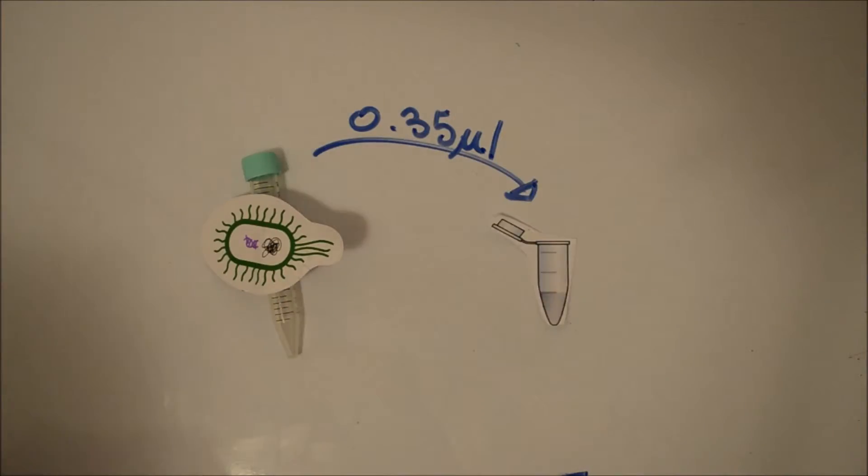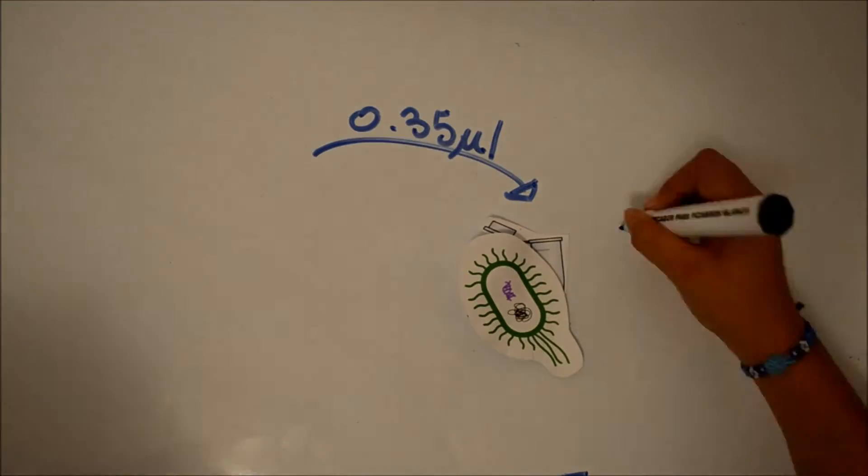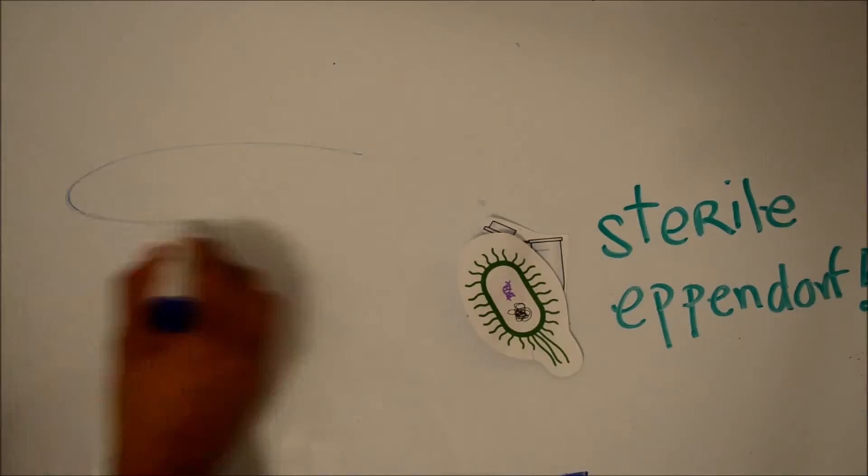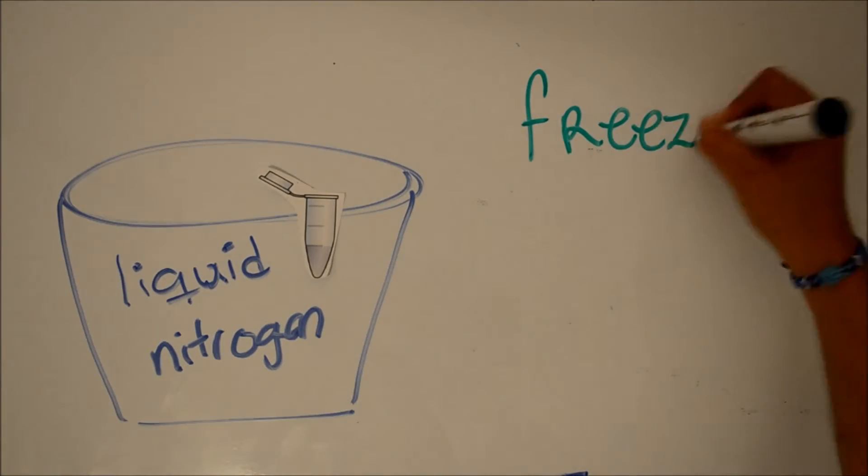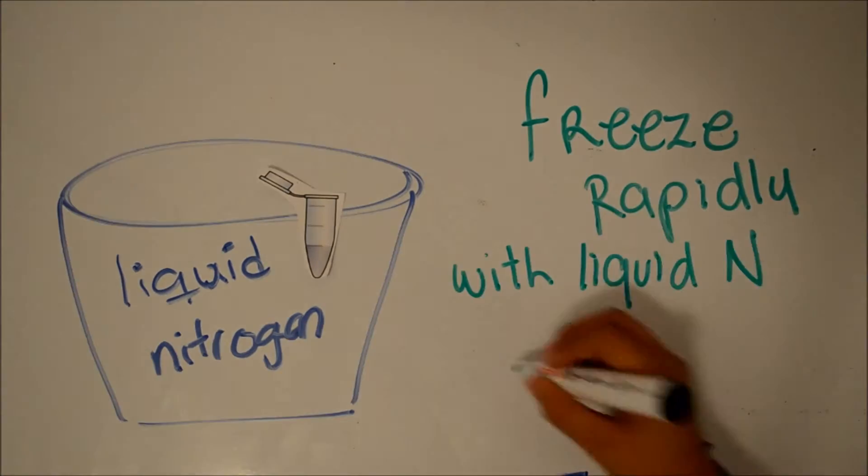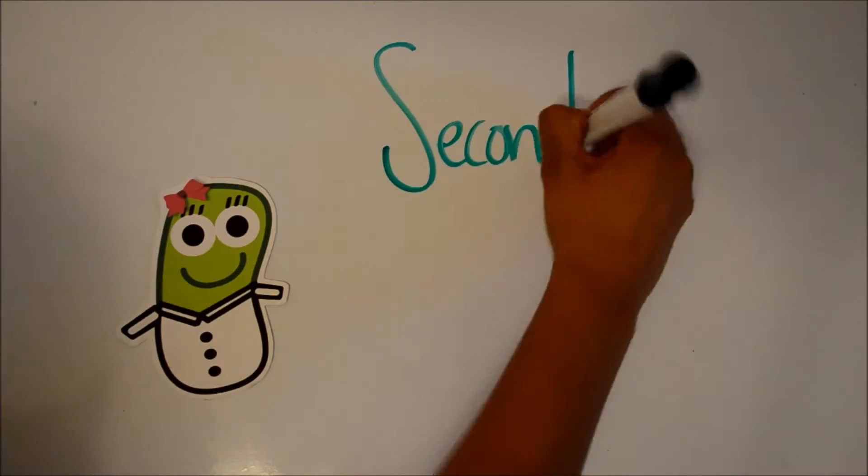Aliquot the competent cells in sterile Eppendorf tubes. Freeze rapidly in liquid nitrogen bath and store at minus 80 degrees. This is the second step.